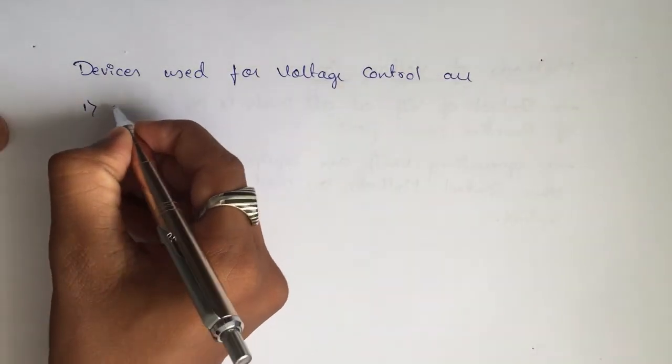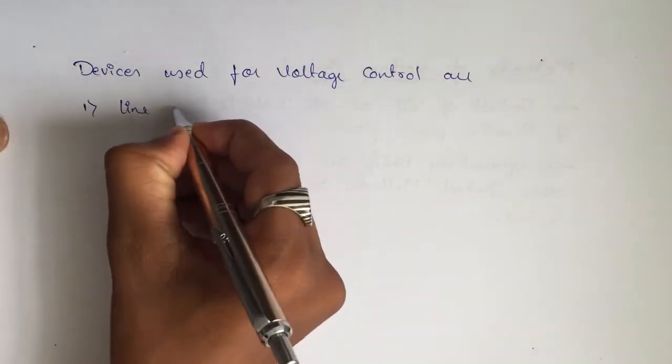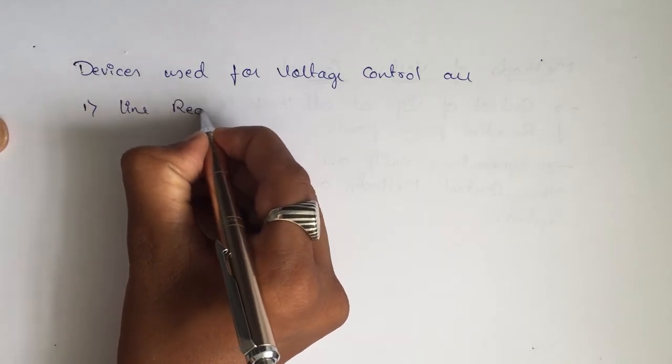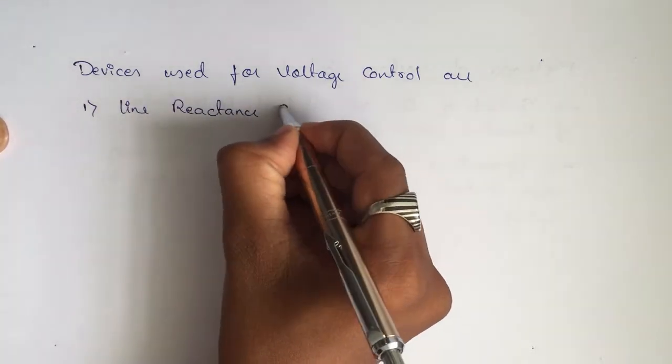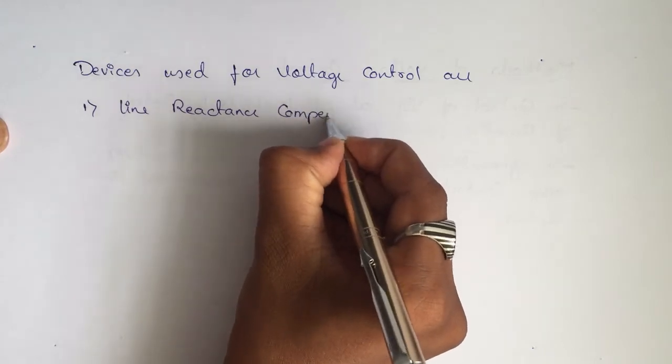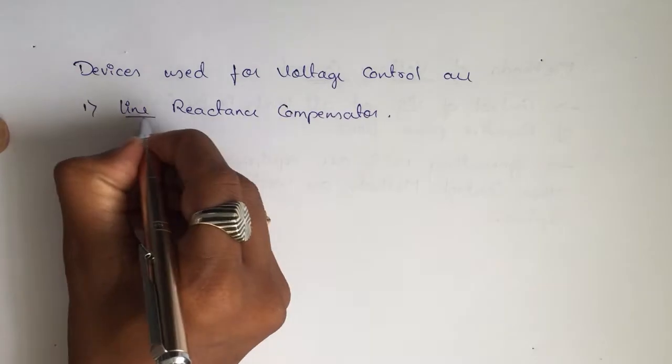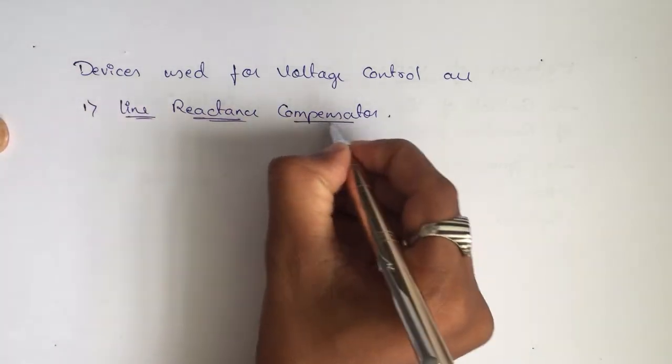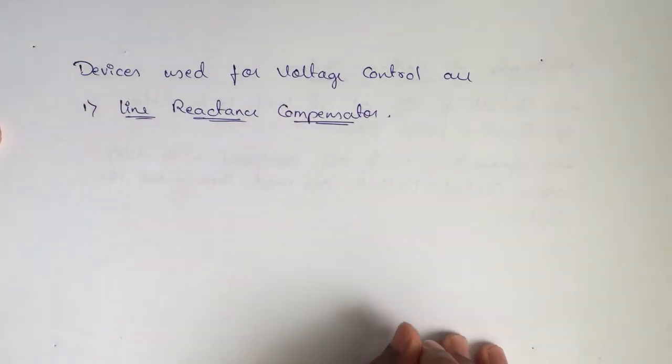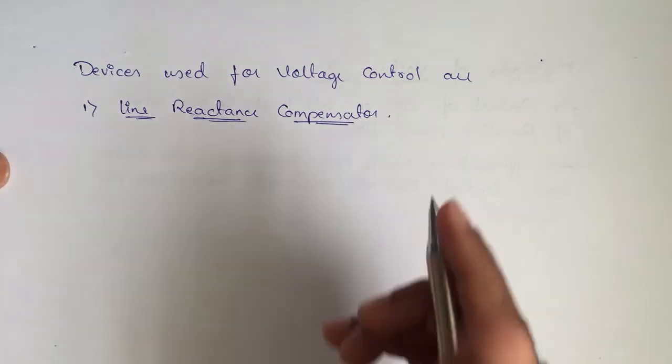First one is line reactance compensator. These are nothing but series capacitors. In a line reactance compensator we use series capacitors, remember.